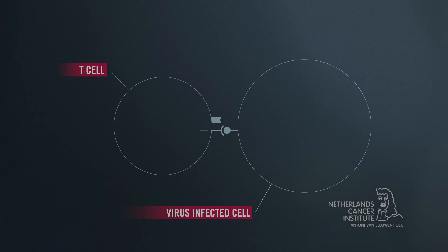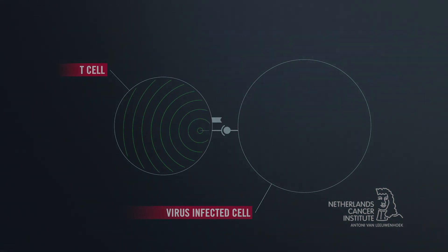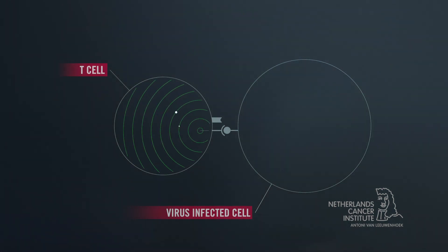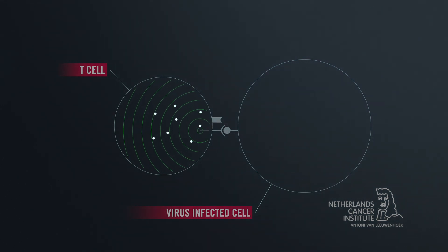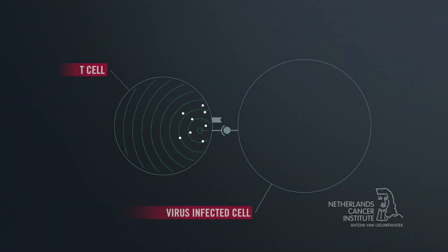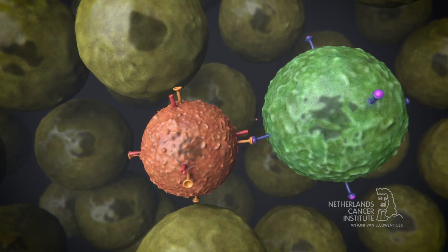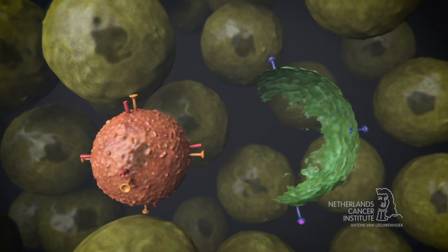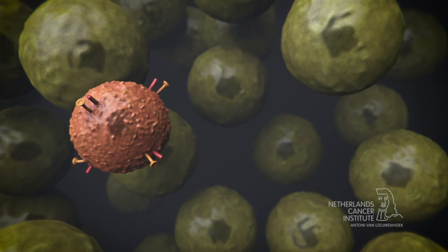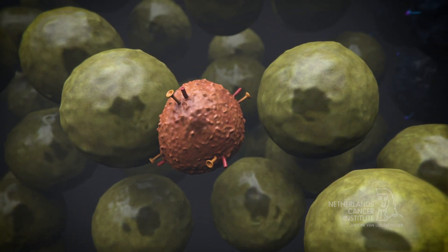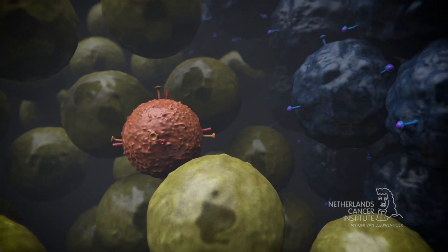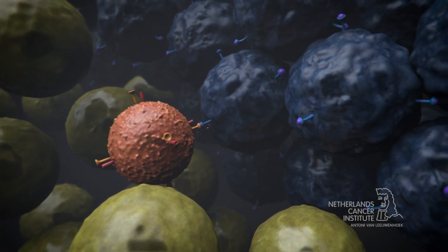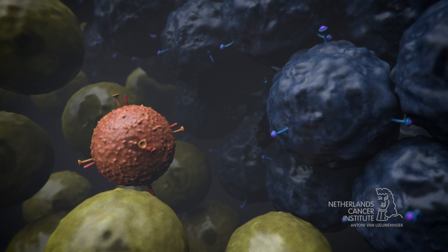When the T cell receptor recognizes an abnormal cell, it will attach to the cell. The receptor then gives a signal to the T cell to destroy the abnormal cell by releasing deadly molecules. T cells play a central role in cancer immunotherapy because they can recognize cancer cells as abnormal cells and subsequently destroy them.